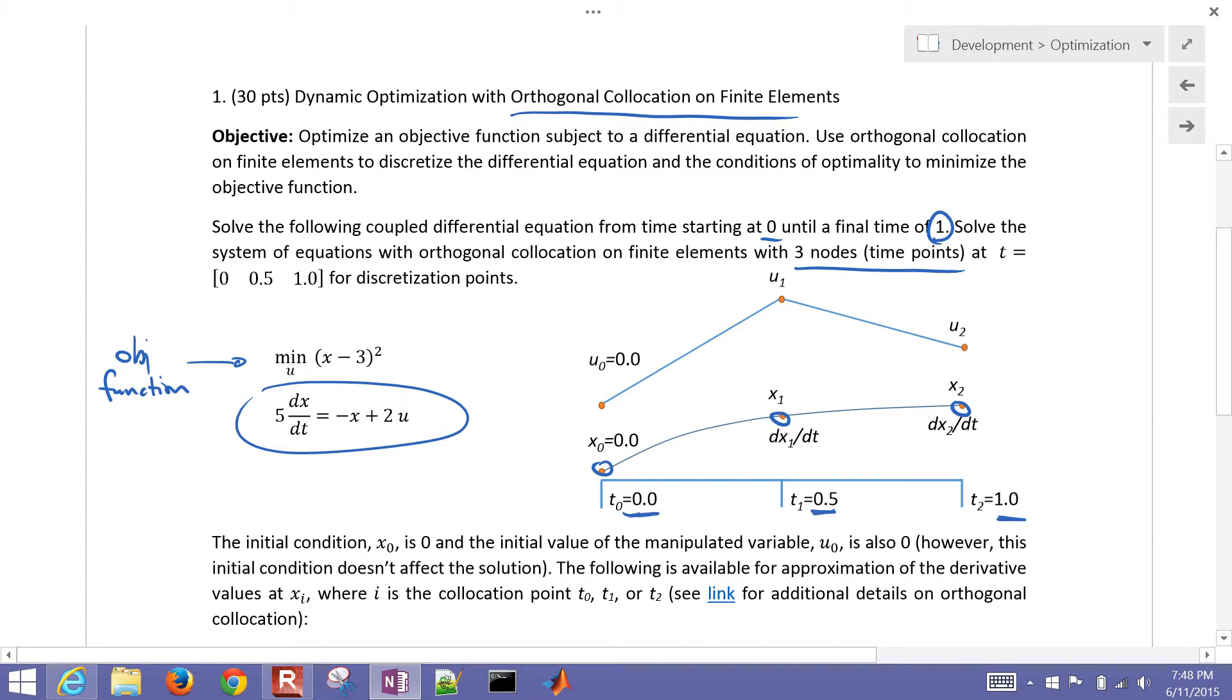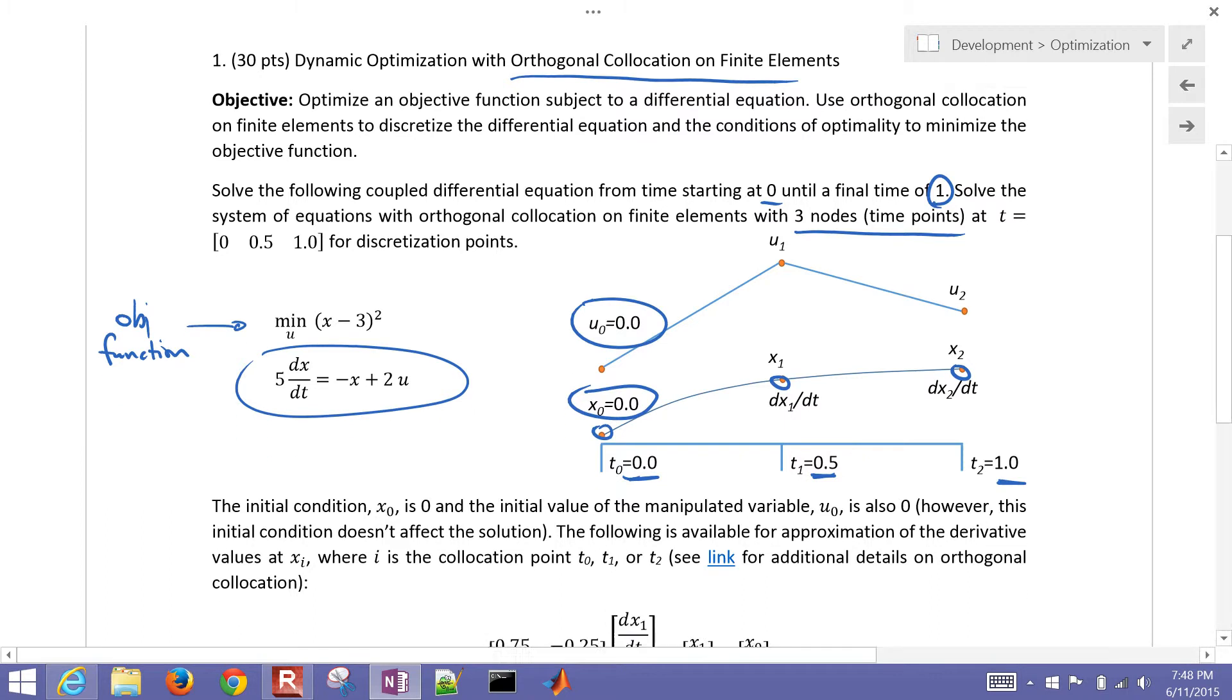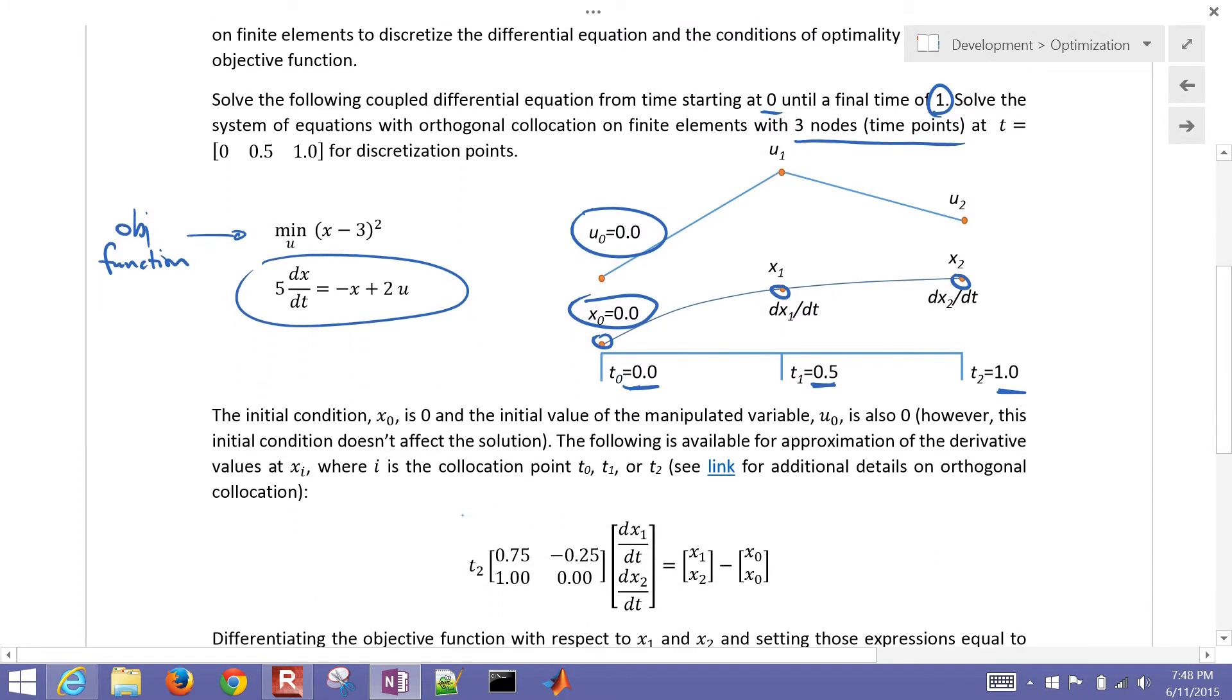So the initial condition for x is zero and the initial value of the manipulated variable, that's our degree of freedom, is also zero. However, this isn't going to affect the solution. The following is available for approximation of the derivative. This is our collocation equation where we relate the differential term to the non-differential terms and that gives us an additional two equations. If you need help on this there's an extra link here on orthogonal collocation.